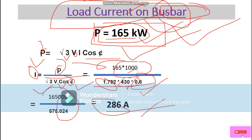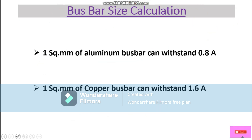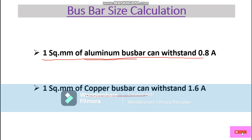Now according to this load current we calculate the bus bar size. The thumb rule is: one square mm of aluminium bus bar can withstand 0.8 ampere, and one square mm of copper bus bar can withstand 1.6 ampere. We will now calculate the copper bus bar size.